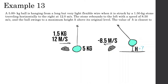This problem involves both energy and momentum. So let's look at before the collision and after the collision. Momentum initial equals momentum final. Before the collision, we have the 1.5kg stone going 12 m/s. We have the 5kg ball that's not moving.